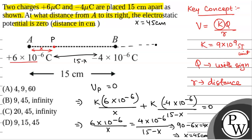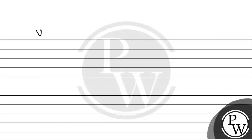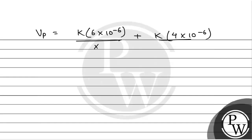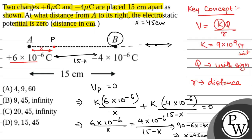In another case, if we consider point P between the two charges, the electric potential at P equals K × (6 × 10⁻⁶) / X plus K × (4 × 10⁻⁶) / (15 − X) equal to 0. Solving this gives 6 / X = 4 / (15 − X), and X = 9 centimetres. It is obvious that X is less than 15 centimetres, and in this case we are taking the point on the line segment AB.